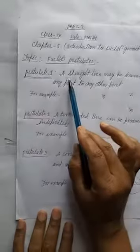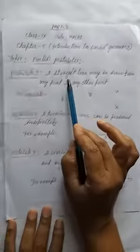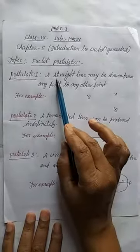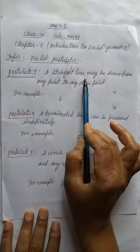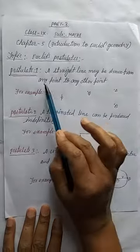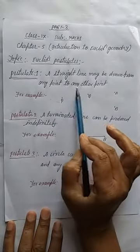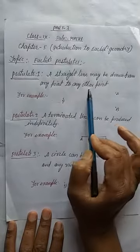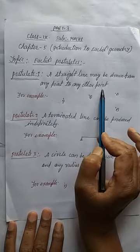So the first postulate is like this. I am reading first of all, then I will explain. A straight line may be drawn from any point to any other point. So this is the statement.